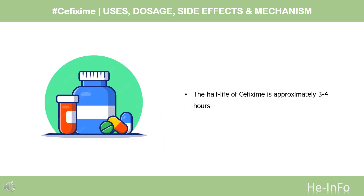Half-life is 3–4 hours, and may range up to 9 hours. In severe renal impairment (5–20 mL per minute creatinine clearance), the half-life increased to an average of 11.5 hours.